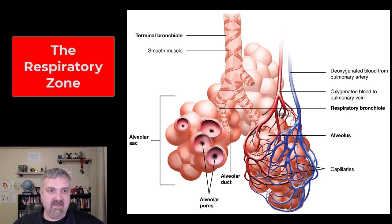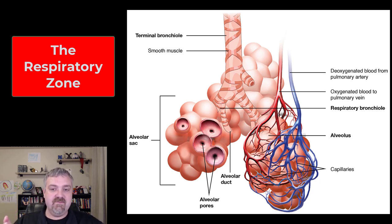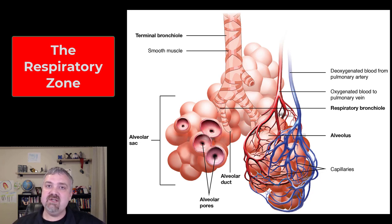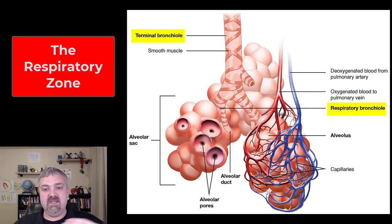Hey everybody, Dr. O. So we have done lots of videos where we covered the conducting zone or conducting portion of your respiratory system. We started with the nose and the mouth into the pharynx, the larynx, the trachea and down the bronchial tree. Now we are actually at the respiratory zone, which is where gases are exchanged. The respiratory zone begins where a terminal bronchiole, which we left off in the last video, attaches to a respiratory bronchiole. So now we are at the part of the respiratory system that trades oxygen for carbon dioxide.